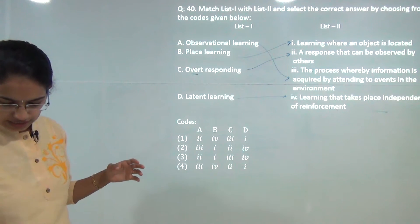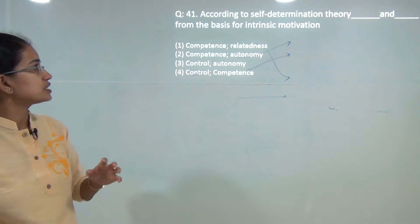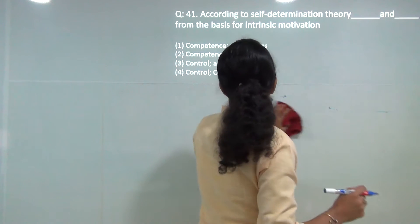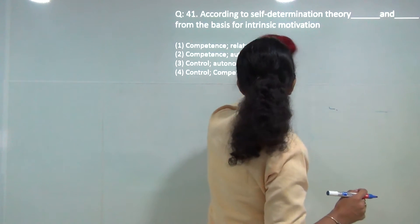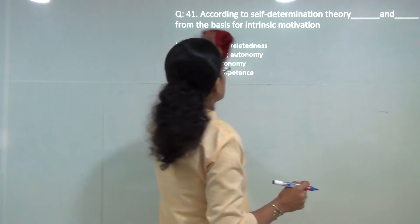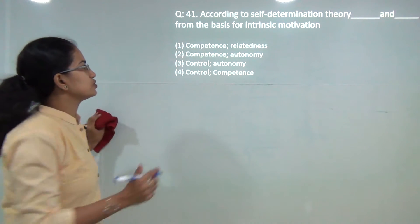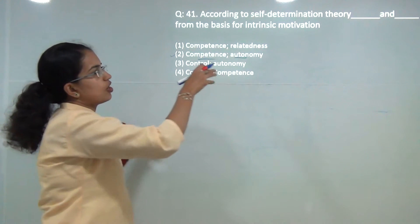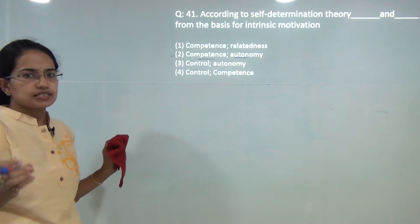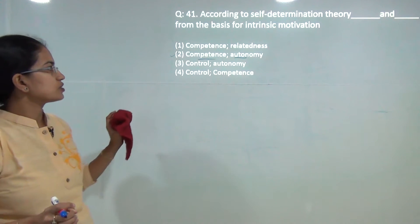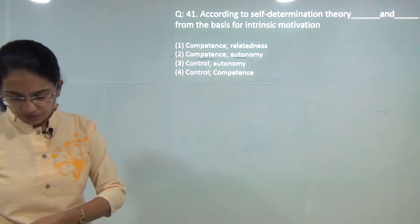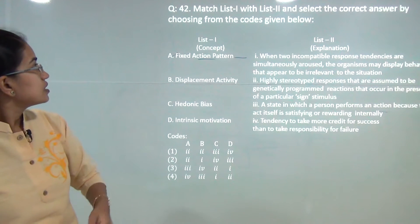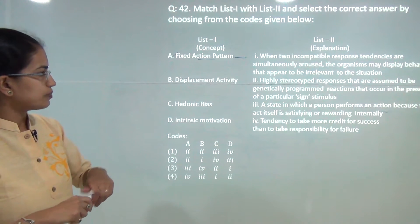Self-determination theory talks about three basic things: competence, relatedness, and autonomy. However, of these three, competence and autonomy govern or are the basis for the intrinsic motivation of an individual. So the correct answer here would be two, that is competence and autonomy.